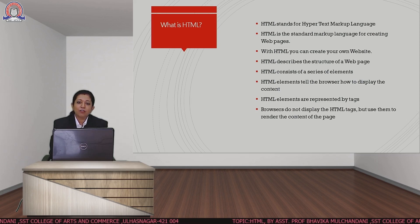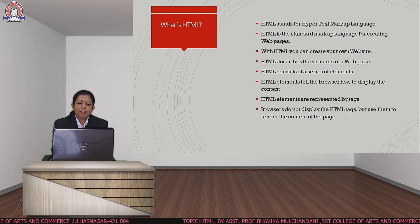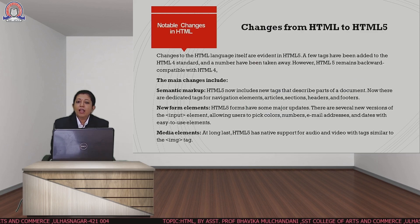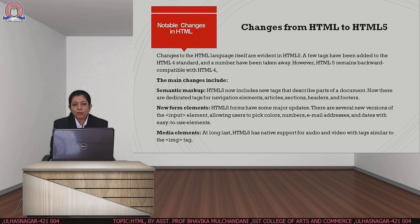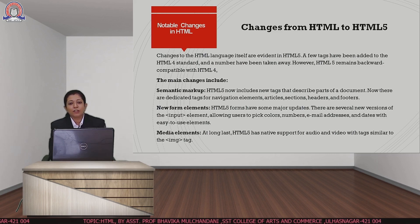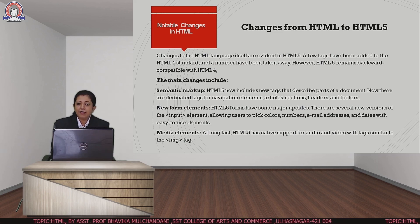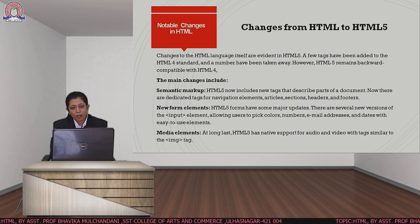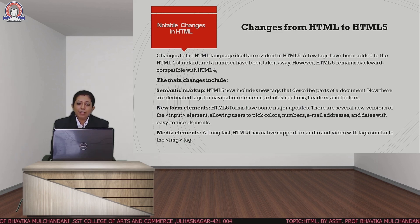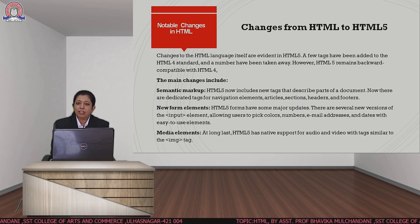HTML language consists of elements which are called as tags and attributes. Now let us see the changes from the old version to the new version. We are going to study the latest version, that is HTML version 5, which has remarkable changes. The semantic tags are included in HTML5 which were not there in HTML4 or previous versions. We also have various new input elements of forms which are new in HTML5.